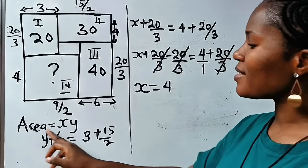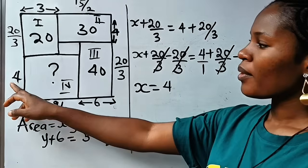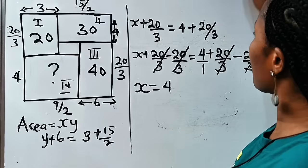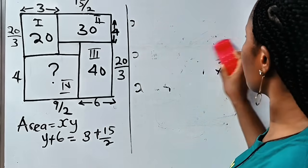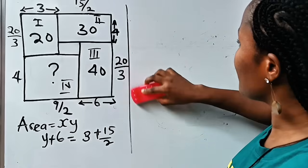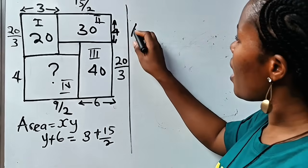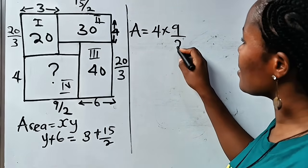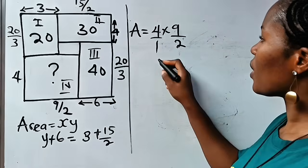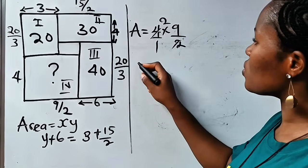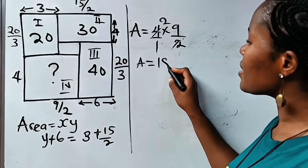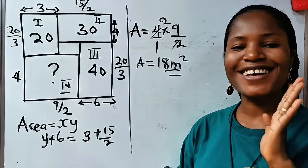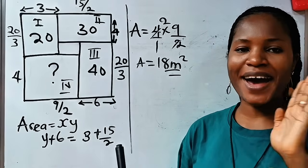Remember that our area is x multiplied by y. Our x is 4 and our y is 9 over 2. So the area is equal to 4 multiplied by 9 over 2. Dividing 4 by 2 gives us 2, so the area is 2 times 9, which equals 18 square meters. Thank you so much for watching — see you in my next video!